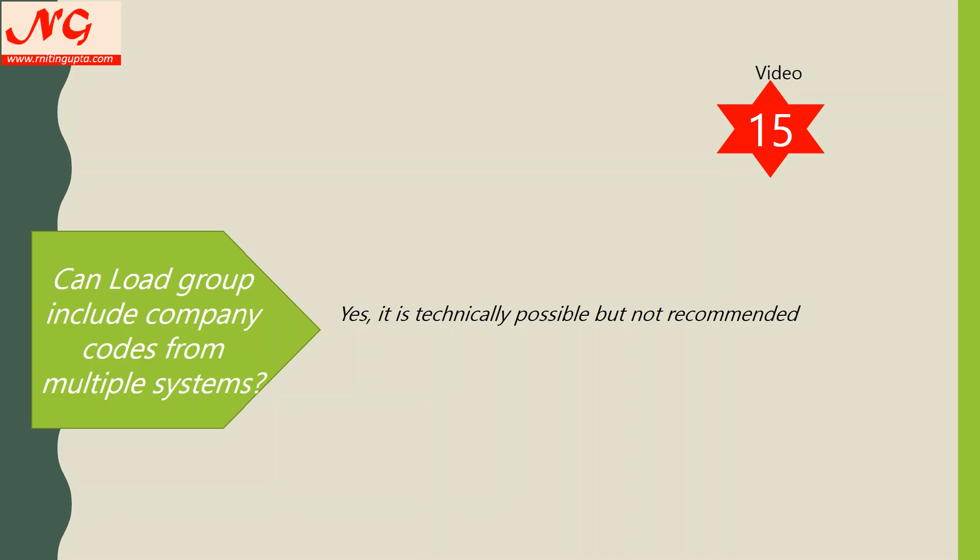Can an initial load group include company codes from multiple systems? Technically yes — if you have two source systems, you can put one company code from one system and another from the other system in the same initial load group. However, it is not recommended to combine multiple systems in one load group, because if you have a technical challenge, a failure, job issues, or document issues, it will be very difficult to identify which system a document belongs to and you will need to drill down deeply to investigate.